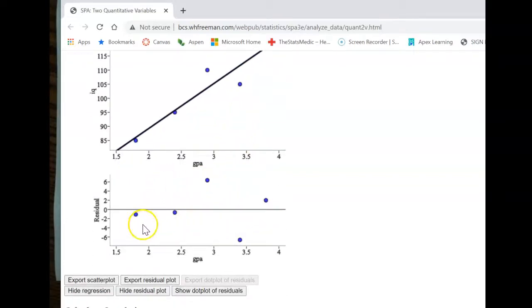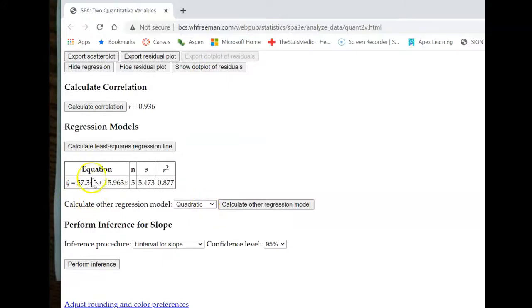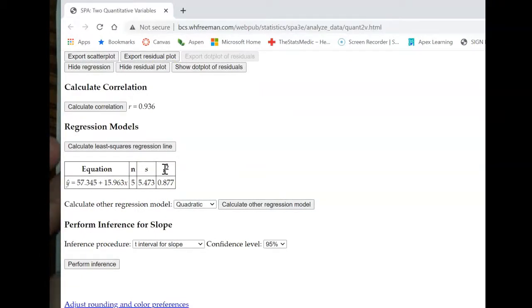If we take a look at our residual plot, we can see it's scattered. I'm not seeing an exact pattern. I got some down, I got some up. About half are under and half are over, so I don't feel like there's a pattern. I think a line is a pretty good model here. We have our equation, and then we have some other information. We have our correlation coefficient 0.936. Our r squared is 0.877. That sounds kind of familiar. S is the standard deviation of the residuals: 5.473.